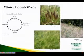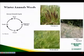Winter annual weeds, such as cheatgrass, medusahead, and tumble mustard, germinate from seed in the fall to late winter. They mature and produce seed during the following spring and die in early summer. Seeds of winter annuals remain dormant during the late spring and summer to germinate the following winter.